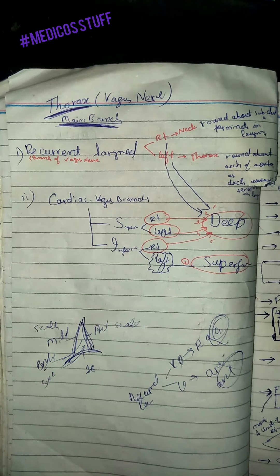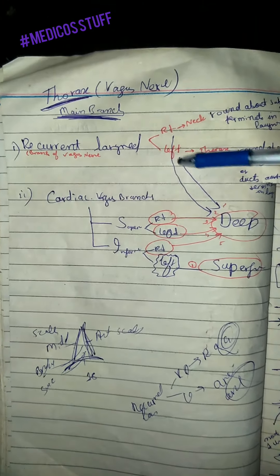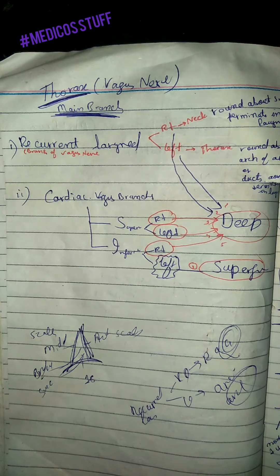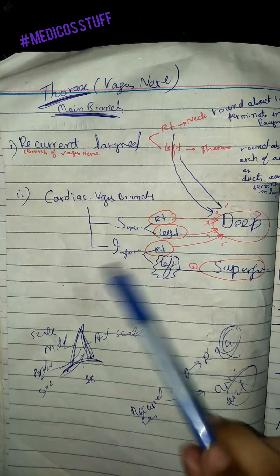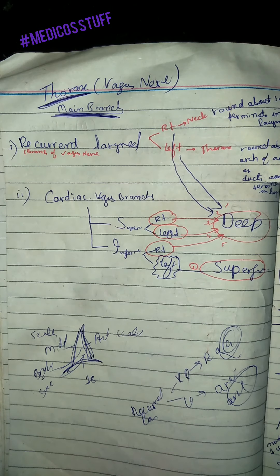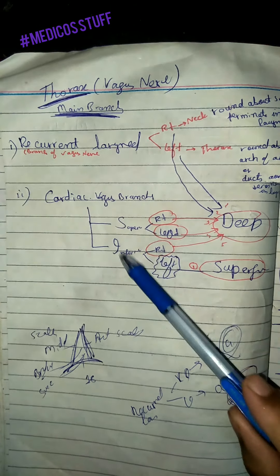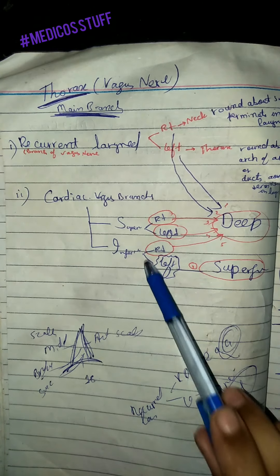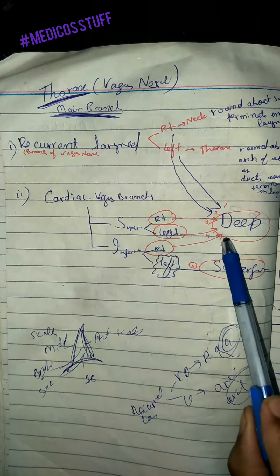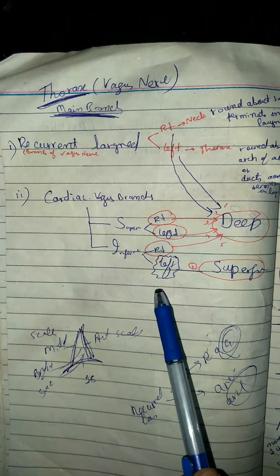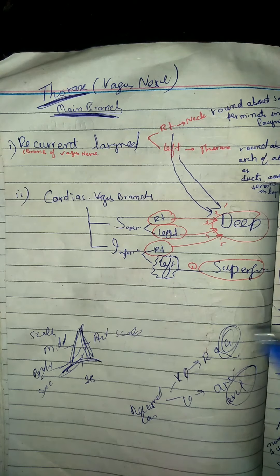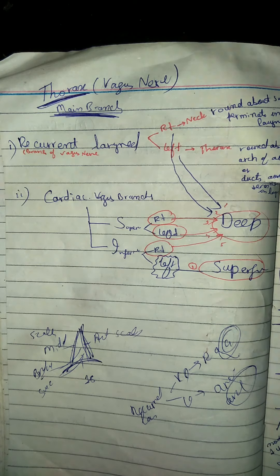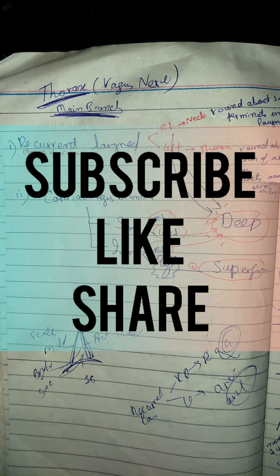Both right and left recurrent laryngeal nerves join each other at the level of the larynx and come into the deep cardiac plexus. The cardiac vagus nerve has two branches: superior and inferior. The superior branch has right and left, both going into the deep cardiac plexus. The inferior branch — only the right goes into the deep part, while the left goes into the superficial part of the cardiac plexus.